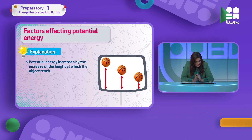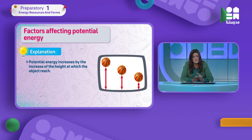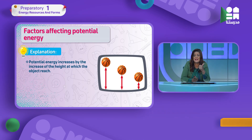Potential energy increases by the increase of height at which the object reaches. So as height increases, potential energy increases. And what else increases potential energy? The weight. Weight equals mass times gravity — you took this before in primary stage. Weight equals mass times gravity (g = 9.8).